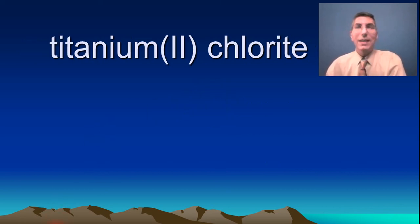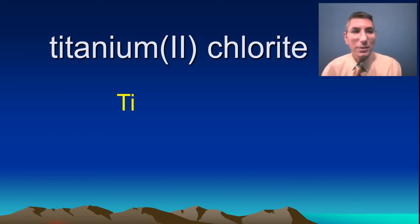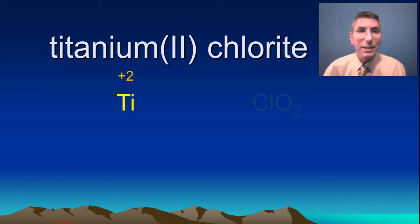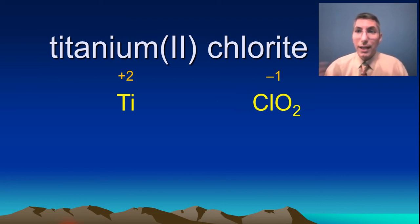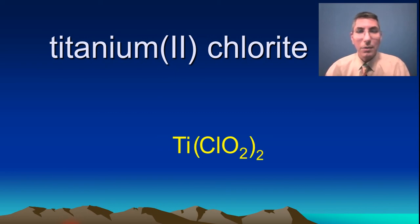Next: titanium(II) chlorite. Titanium has the symbol Ti with a charge of positive two. Chlorite is a polyatomic ion, ClO₂, with a charge of negative one. The charges don't cancel, so we swap them. We also need parentheses around the chlorite since we're placing a subscript on a polyatomic ion. The formula is Ti(ClO₂)₂.